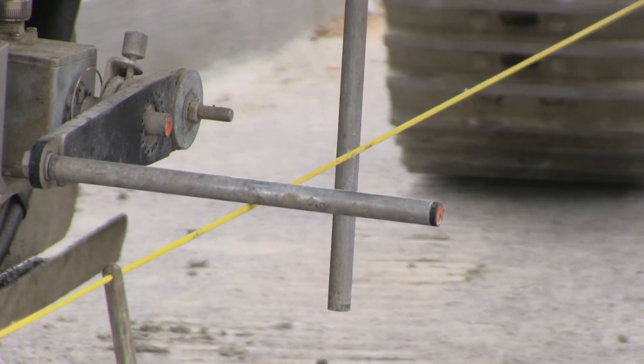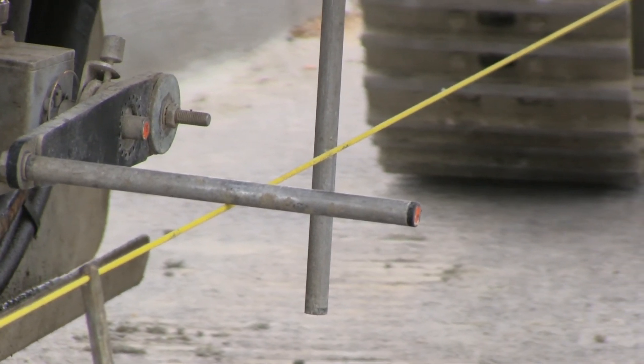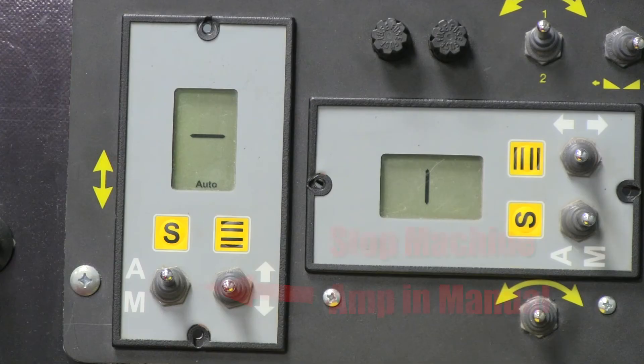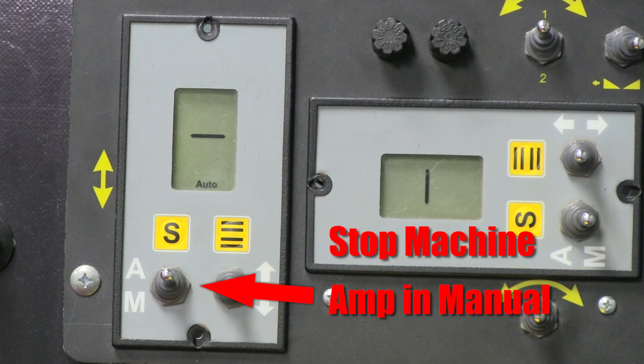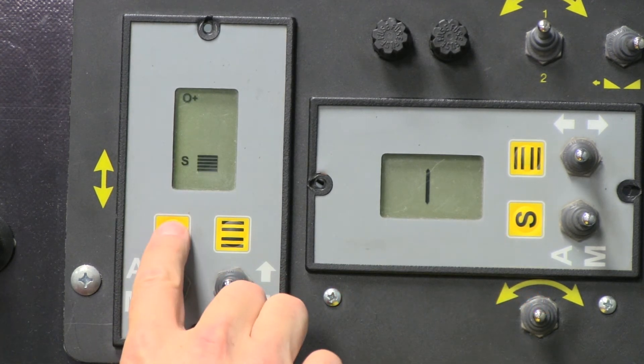Sensitivity refers to how fast the machine will respond to a deviation from a sensor. You should always make changes to your Smart Amps while the machine is stopped and the Smart Amp is in manual. To adjust the sensitivity, press the S button.